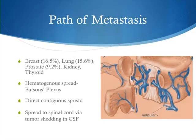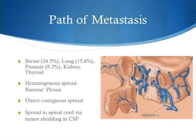What is the path of mets? Mets can come from anywhere — associated with breast cancer 16.5 percent, lung 15.6 percent, prostate 9.2 percent, kidney and thyroid as well. Most commonly spread hematogenously via Batson's plexus — that valveless plexus of veins around the spinal column. Because of its valveless nature, any increase in intra-abdominal or intra-thoracic pressure can lead to retrograde flow and increase exposure time for tumor cells to seed around the spinal column. Tumors can also spread via contiguous spread and tumor shedding. Sites of mets: thoracic spine is most common, usually 70 percent; lumbar spine 20 percent. Metastatic disease can occur in the cervical spine and sacrum as well.